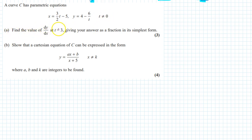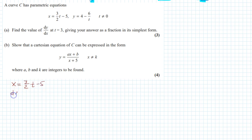Find the value of dy/dx. To find dy/dx, let x = 3/(2t - 5), so dx/dt = 3/2. The constant -5 differentiates to 0.